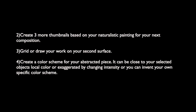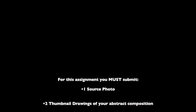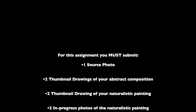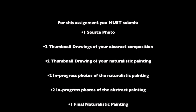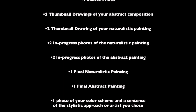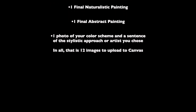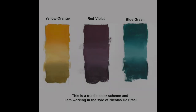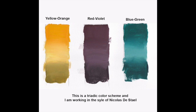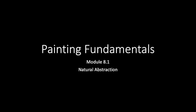The artist you choose to emulate must be one from the list provided. Next, create three more thumbnails based on your naturalistic painting for your abstract composition, then grid or draw your work on your second surface. Create a color scheme for your abstracted piece — it can be close to your selected object's local color, exaggerated by changing intensity, or you can invent your own specific color scheme. Once finished, please submit: one source photo, two thumbnail drawings of your abstract composition, two thumbnail drawings of your naturalistic painting, two in-progress photos of the naturalistic painting, two in-progress photos of the abstract painting, one final photo of the naturalistic painting, one final photo of the abstract painting, and one photo of your color scheme along with a sentence or two about the stylistic approach or artist you chose. That's 12 images to upload to Canvas. The rubric for this assignment can be found on the PowerPoint and the assignment sheet — please refer to that for what to submit and how I will be grading.